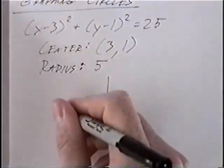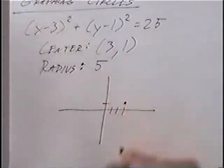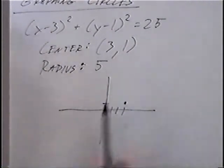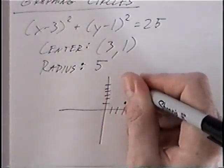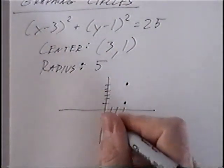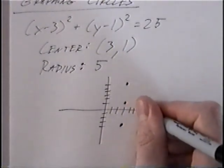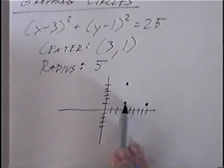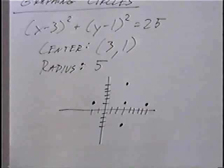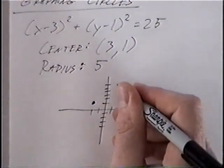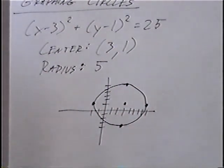To graph a circle, you can draw the xy axis. We'll do the center first, which is at (3, 1). The radius of 5 means it's 5 in every direction. From the center we can go up 5 spots, down 5 spots, to the right 5 spots, and to the left 5 spots. Once you have those 4 points, you can connect them to make a circle shape. And that would be the graph of the equation.